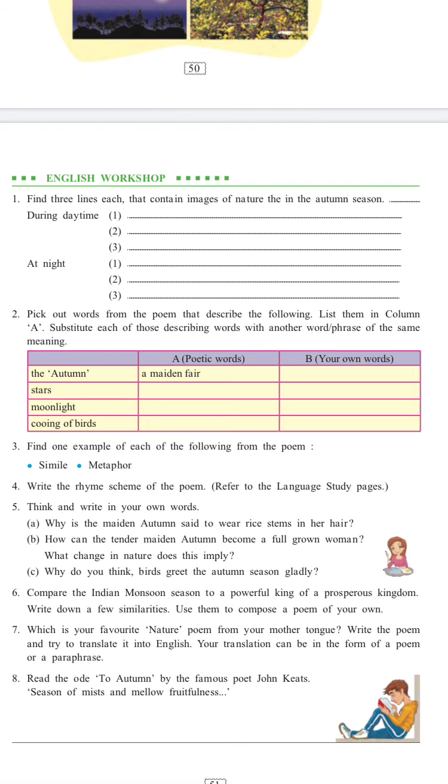Question number two: Pick out words from the poem that describe the following. List them in column A. Substitute each of the describing words of the same meaning. Three columns: the poetic words and words used in its own words.